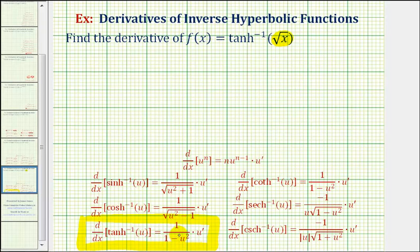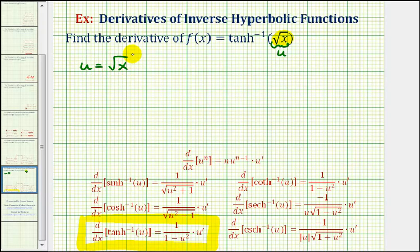The first factor is equal to the derivative of the outer function evaluated at the inner function, and the second factor, u prime, is equal to the derivative of the inner function. Going back to our function, we need to recognize that the inner function is equal to the square root of x, so we'll let this equal u. We can now think of our function as inverse hyperbolic tangent of u.